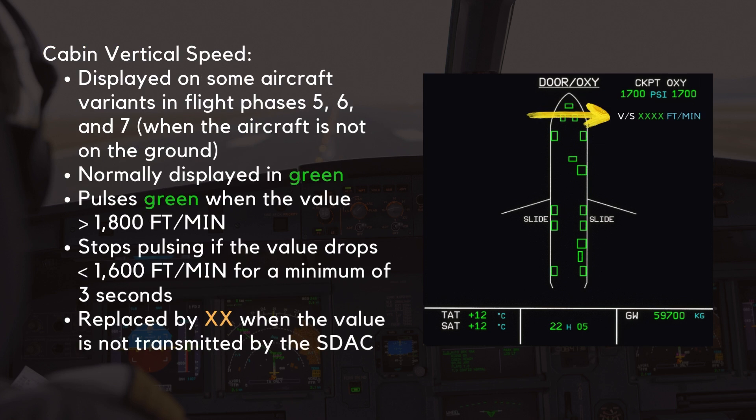The cabin vertical speed indication is displayed on some aircraft variants below the oxygen pressure indications in flight phases five, six, and seven — i.e. when the aircraft is not on the ground. The value is normally displayed in green and pulses green when the value exceeds 1,800 feet per minute, stopping pulsing if the value drops below 1,600 feet per minute for a minimum of three seconds. It is replaced by two amber crosses when the value is not transmitted by the S-Stack.